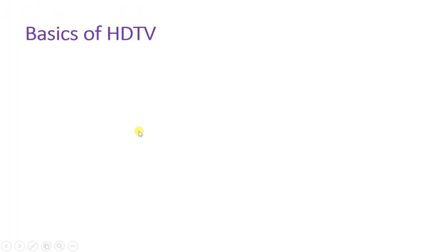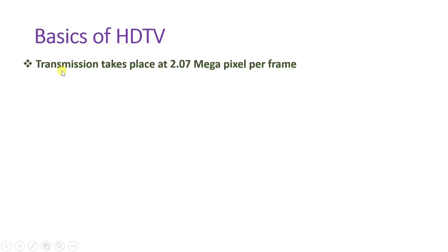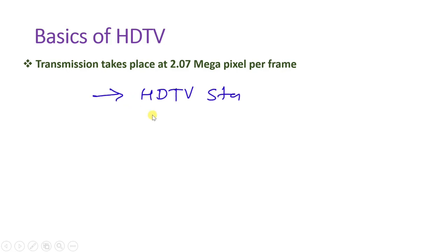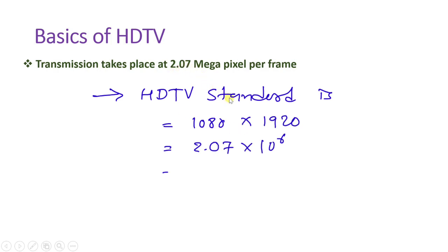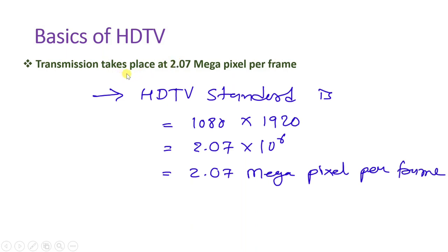Let us begin with the basics of HDTV. Transmission of HDTV takes place at 2.07 megapixels per frame, which is the quality of image in video. The highest data rate in HDTV is 1080 pixels. For the 16:9 ratio standard, that gives 1080 × 1920, and if you multiply these two, you get 2.07 × 10⁶ — that is, 2.07 megapixels per frame.